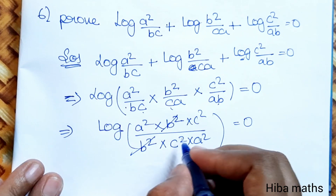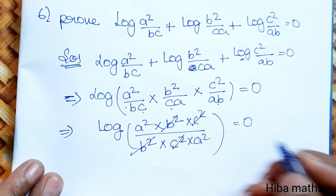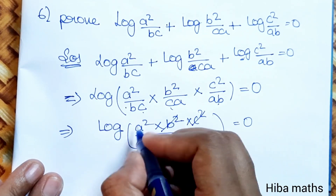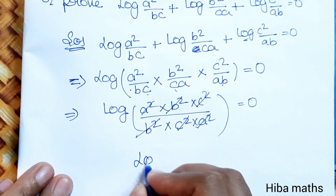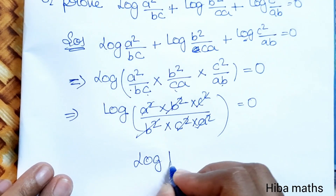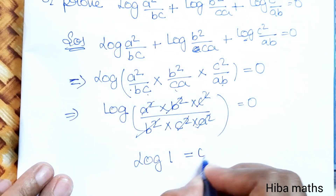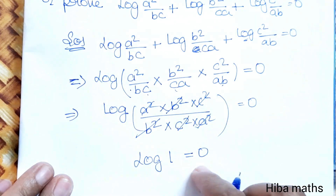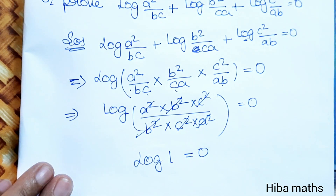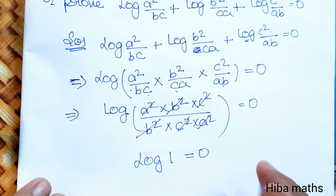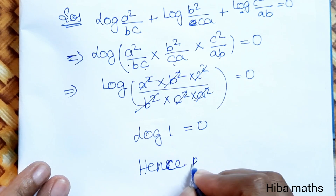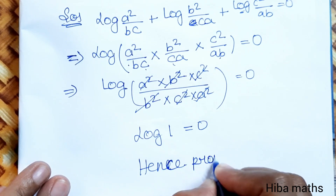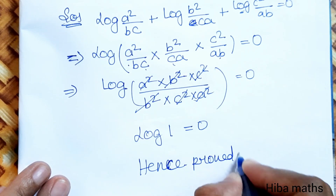So B² and B² cancel, C² and C² cancel, A² and A² cancel. Therefore log of 1 is equal to 0, and log 1 = 0. Hence proved.